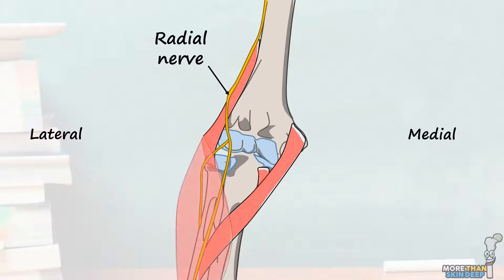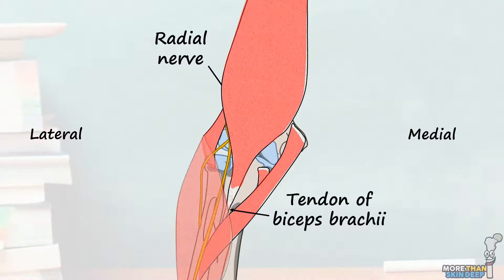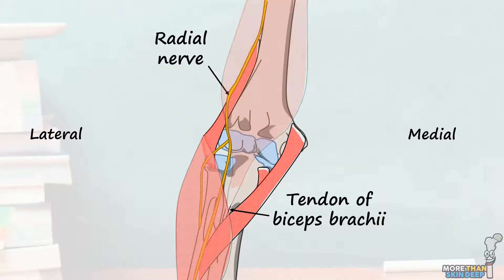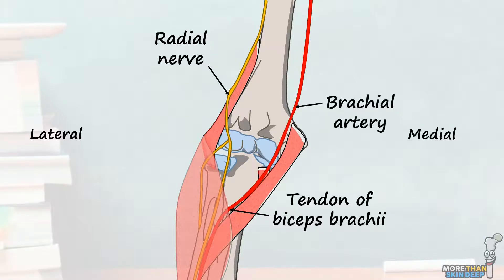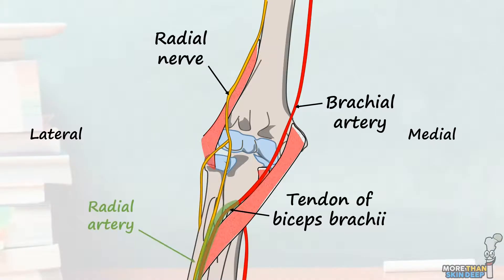The next structure is the tendon of biceps brachii, which passes right through the middle of the cubital fossa to insert into the radial tuberosity deep to pronator teres. Running down the medial side of the biceps tendon and lying in the medial part of the cubital fossa is the brachial artery. This large blood vessel bifurcates at the apex of the cubital fossa into the radial artery, which lies laterally, and the ulnar artery, which lies medially.